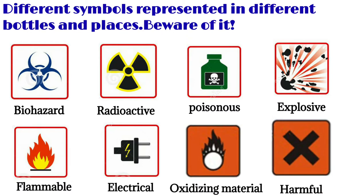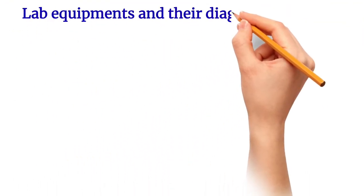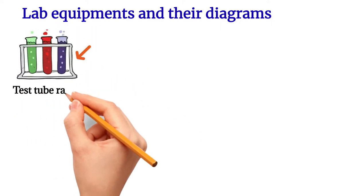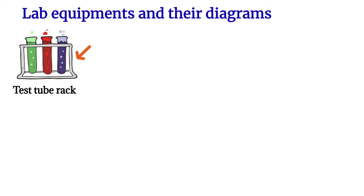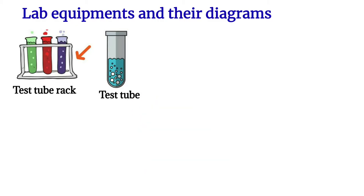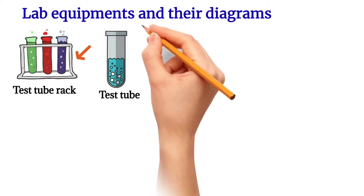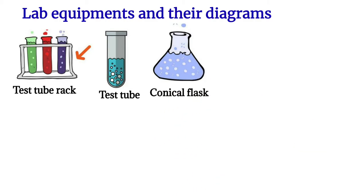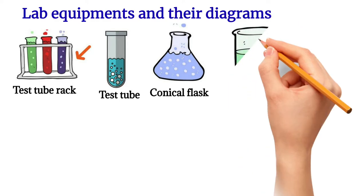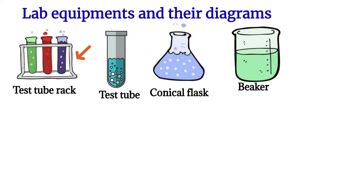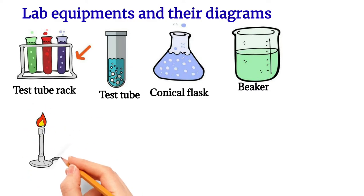Next we move on to lab equipment and their diagrams. The first picture is a test tube rack, and the second picture — most of you know it — is a test tube, used for lab activities. This is a conical flask, which helps to measure the volume of a liquid. And this is a beaker, which also helps to measure the volume of liquid.